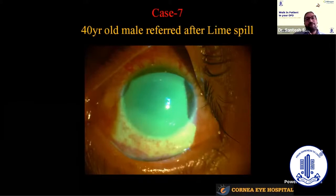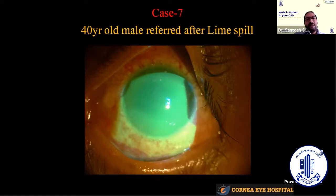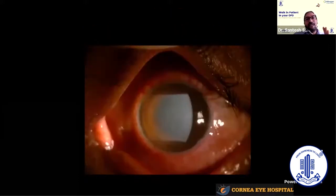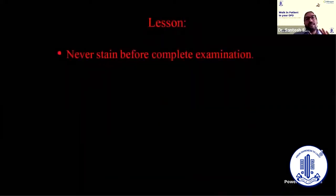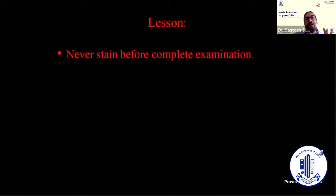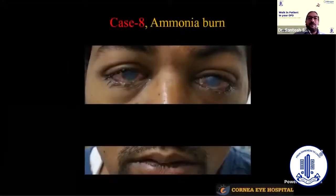Another patient referred after lime water spill — the patient was stained at the primary setting. After staining, a lot of information is lost; for example, it becomes difficult to assess anterior chamber reaction or lens status. We gave medical treatment and called the patient back in the evening, at which point we could see a whole layer of lime over the superficial cornea that was not visible during staining. The message is: complete examination should be done before staining — staining should be done only at the end.